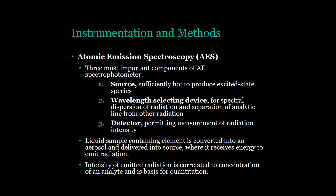A little bit about instrumentation and methods. The first is atomic emission spectroscopy. There are three important components of an AE spectrophotometer: the source, which must be sufficiently hot to produce an excited-state species of the metal; the wavelength-selecting device for spectral dispersion of radiation and separation of the analytic line from other radiation; and the detector that permits measurement of radiation intensity. The liquid sample is converted into an aerosol and delivered into the source where it emits radiation. The intensity of that emitted radiation is correlated to the concentration of the analyte — the more metal in the sample, the more intense the radiation.